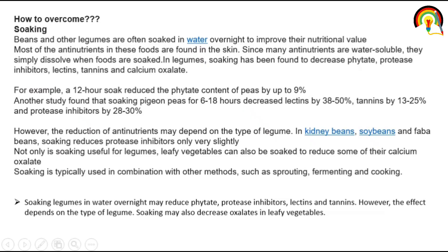Now, how can we reduce anti-nutritional factors? The first method is soaking — beans and other legumes are soaked in water overnight to improve their nutritional value. Most anti-nutrients in these foods are found in the skin and since they are water-soluble, they simply dissolve when food is soaked. In legumes, soaking has been found to decrease phytate, protease inhibitors, lectins, tannin, and calcium oxalate.